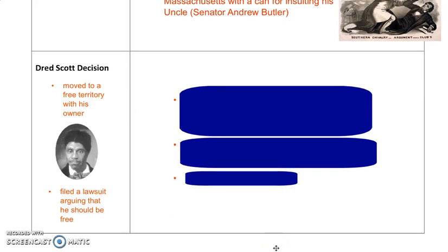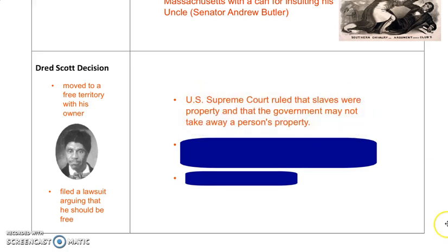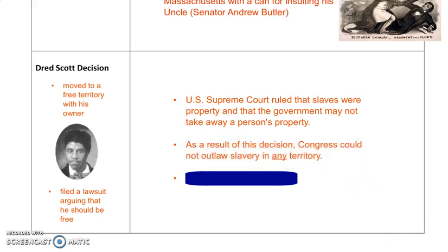Dred Scott was an enslaved man who moved with his owner to a free territory and believed he should therefore be free. He filed a lawsuit arguing for his freedom. The U.S. Supreme Court ruled that slaves were property and the government cannot take away a person's property. Therefore, Congress could not outlaw slavery in any territory. Northerners were furious, as this decision treated enslaved people as property and ruled that Congress had no right to ban slavery anywhere in any territory.